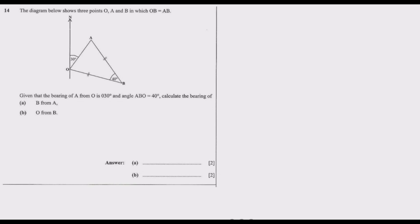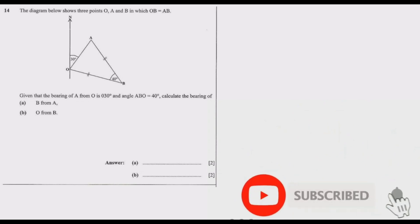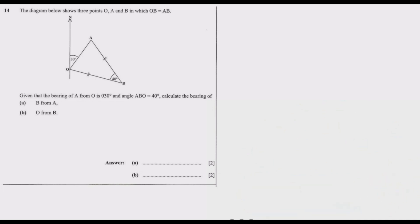Welcome to the sixth episode in which we are looking at the 2020 GCE Mathematics Paper 1. In the first five episodes we covered questions 1 through 13, so today we're starting with question 14. The diagram below shows three points O, A, and B in which OB is equal to AB, given that the bearing of A from O is 030 degrees and angle ABO is equal to 40 degrees. Calculate the bearing of B from A, then O from B.